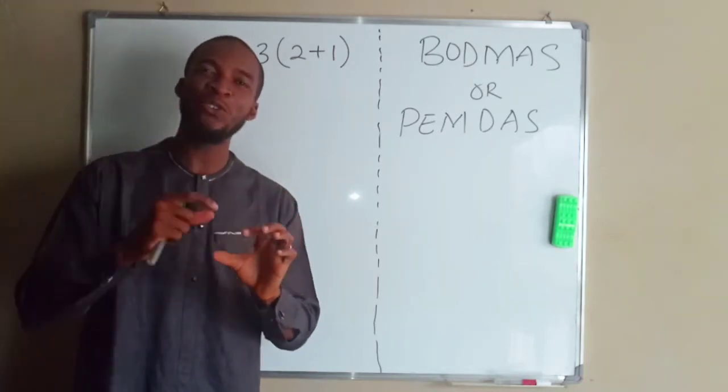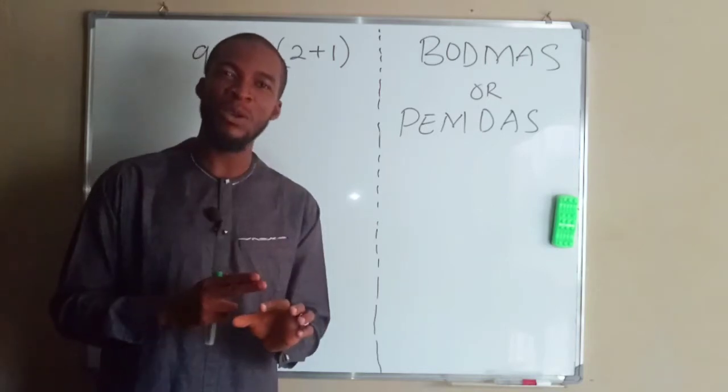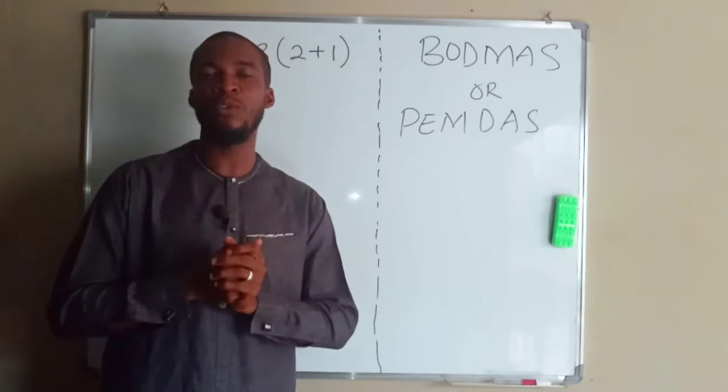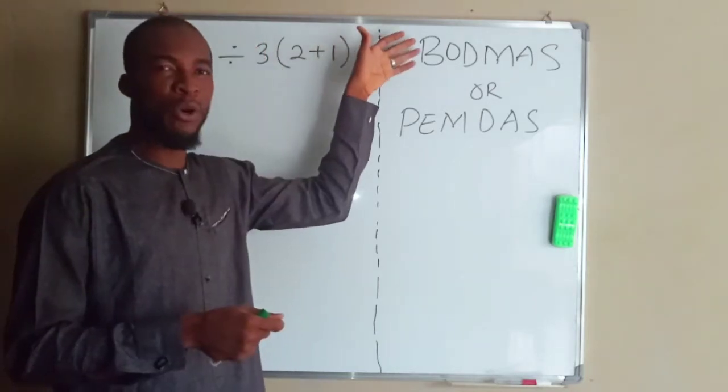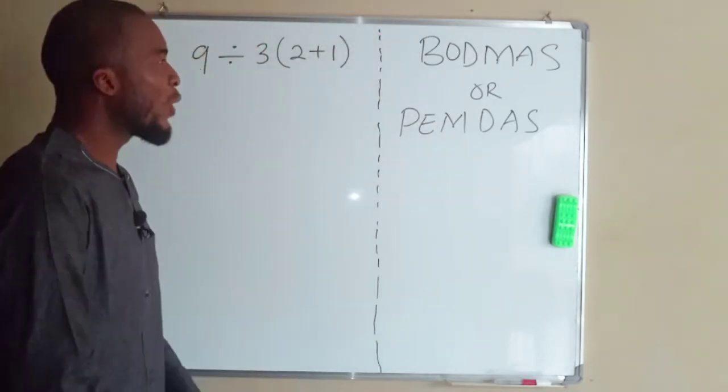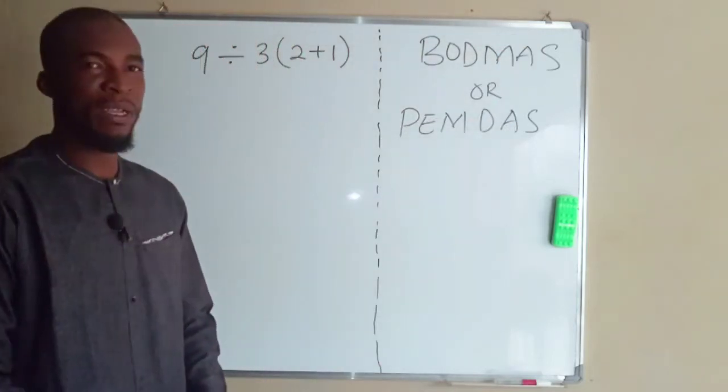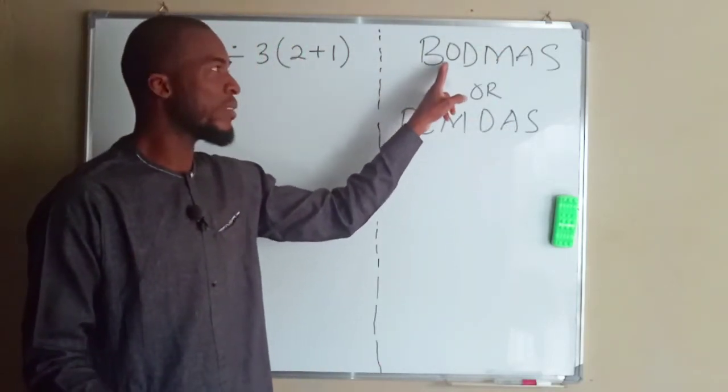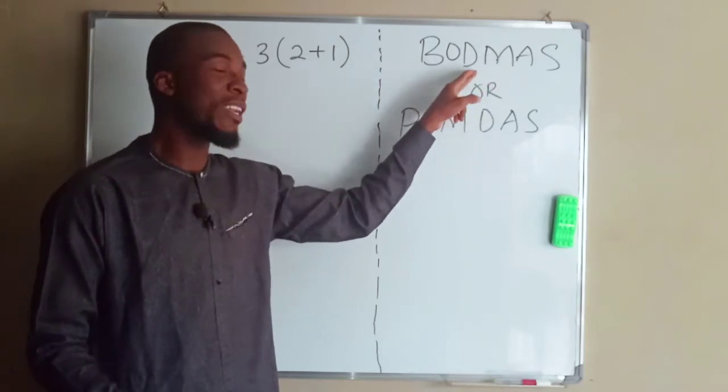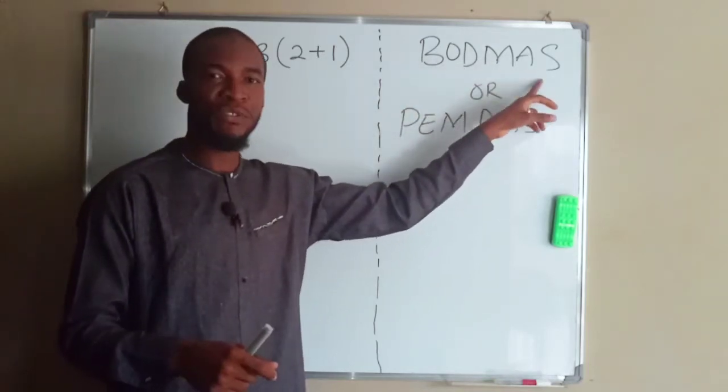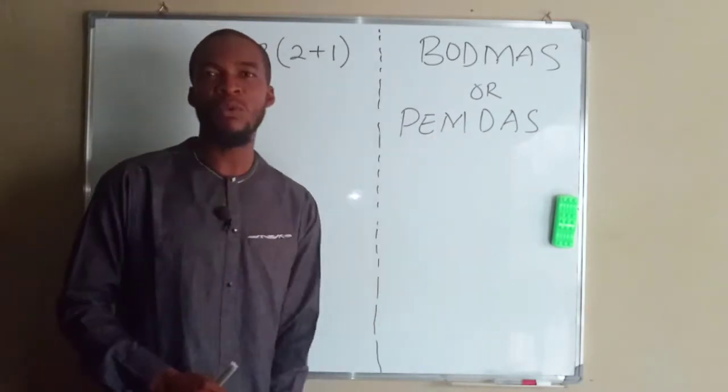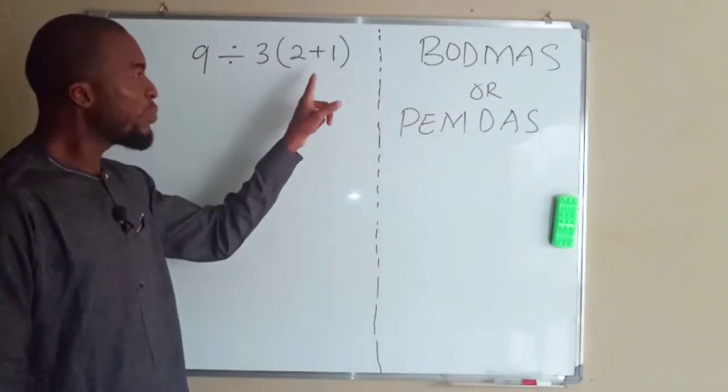Those people saying the answer is one fail to understand the algorithm, which is the step-by-step method to solve arithmetic problems. We have BODMAS or PEMDAS. Applying this principle of BODMAS: bracket, orders, division and multiplication together, addition and subtraction together. Let me break it down one after the other.